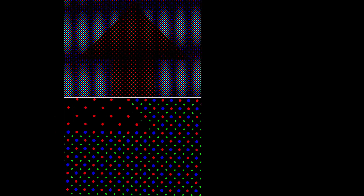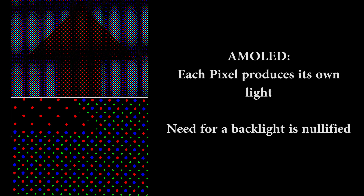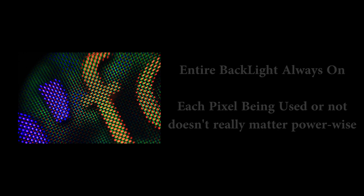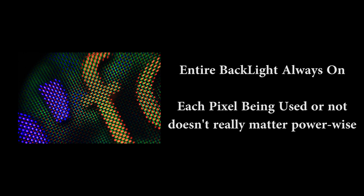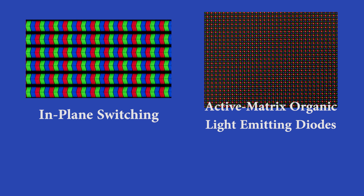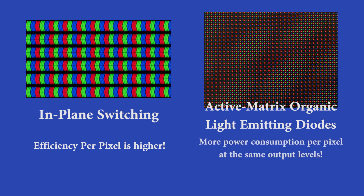Now, let's talk about battery drain in AMOLED and IPS displays. As mentioned, if AMOLED displays have black color on screen, they turn that pixel completely off. However, for IPS panels, the entire backlight remains on even if the output color is plain black. While this point favors AMOLED, there is also a setback: each pixel in AMOLED displays takes up a higher amount of energy compared to an IPS pixel for producing the same amount of light, because IPS inorganic pixels are much more power efficient than the organic pixels used in AMOLED displays.